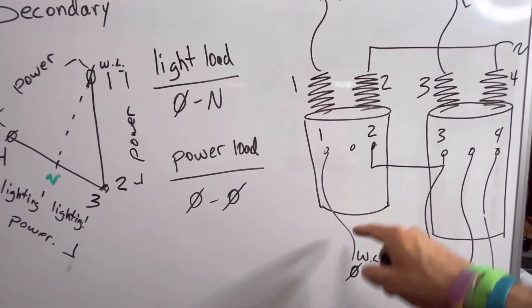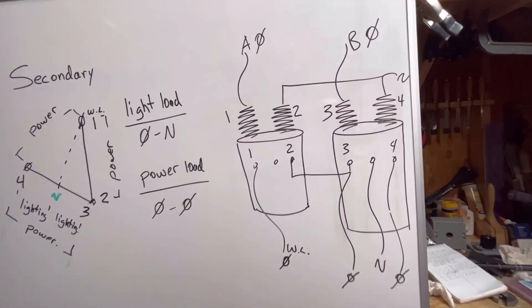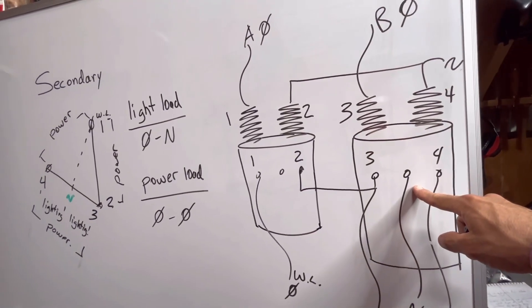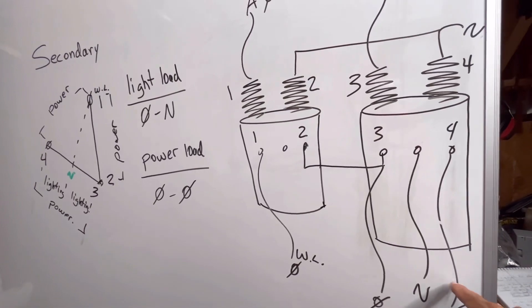My power pot over here is only supplying one phase of my three-phase. This transformer is called my light pot because it's supplying all of my lighting load, or my phase-to-neutral load.